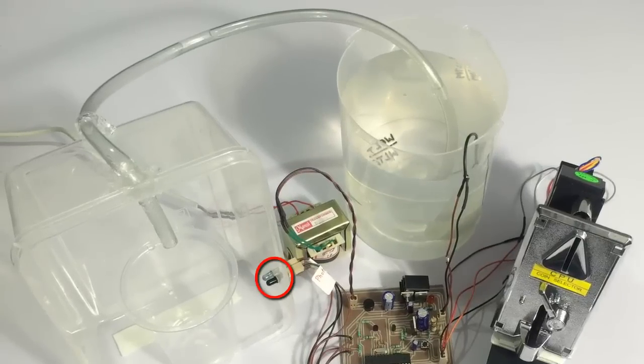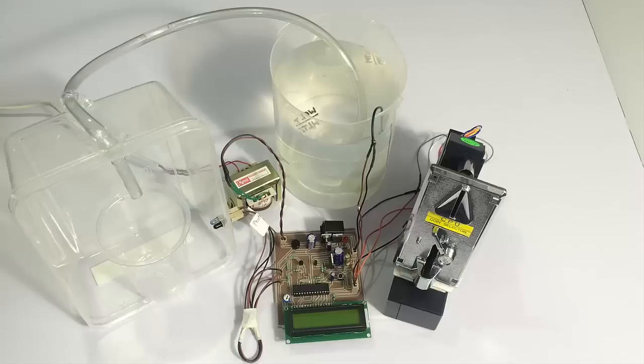As you can see, we have a sensor here for detecting the glass. If it doesn't detect a glass placed below the pipe, it won't dispense the water. It will stop the supply, and only if a glass is present, it will start the supply and fill the glass. This provides for a fully automated water dispensing system based on coin.